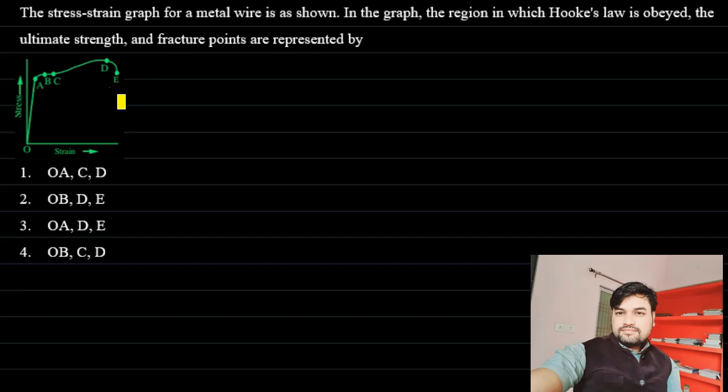Hello students, let us solve this question from mechanical properties of matter. The question is: the stress-strain graph for a metal wire is shown in the graph. The region in which Hooke's law is obeyed, the ultimate strain, and fracture points are represented by...